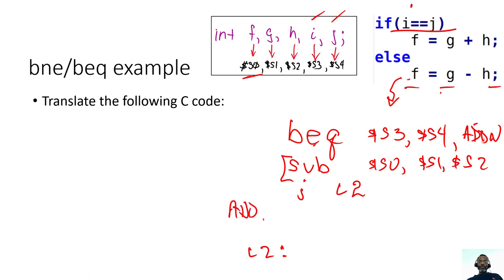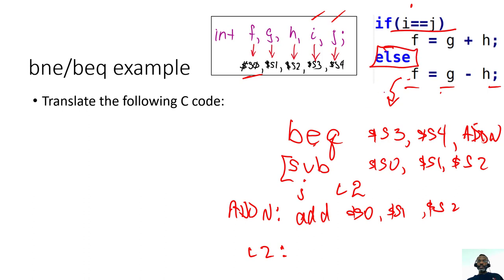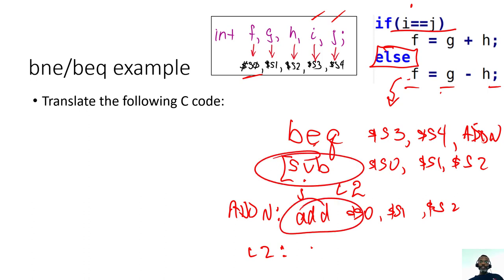We still need the addition operation, so we place the 'addn' label here. Under that label, we do the addition — F equals G plus H — using registers S0, S1, S2. After the addition, we exit — we don't want to fall through and also execute the subtraction. Notice that in the resulting code the subtraction appears first and the addition second, whereas in the original C code addition was first and subtraction second.